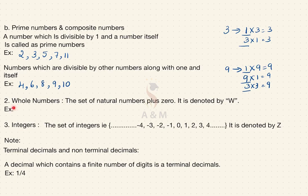The second type of number is the whole number. Whole numbers are the set of natural numbers plus 0, denoted by W. Examples of whole numbers are 0, 1, 2, 3, 4 and so on. The third type is integers — the set of integers consists of both positive and negative numbers along with 0, and is denoted by Z.